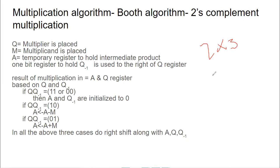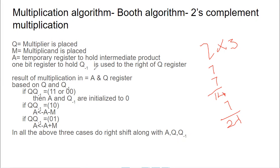We use register A as a temporary register to hold the intermediate product. For example, first you add seven and seven to get 14, which is stored in A, and then the next seven is added to that value. So A holds the intermediate result. There is also another register — a one-bit register called Q-minus-1.